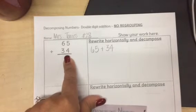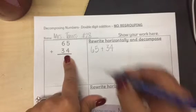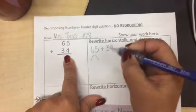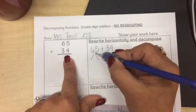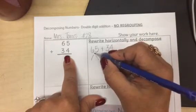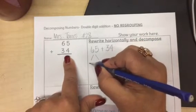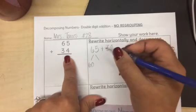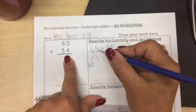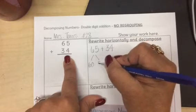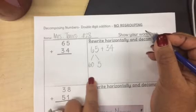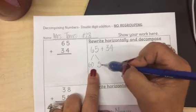When we are decomposing the numbers, we're showing its parts like in expanded form — tens and ones. In the number 65, how many tens are in 65? Six. Six tens is equal to sixty. And how many ones in 65? Just five. So this is 65 in expanded form.